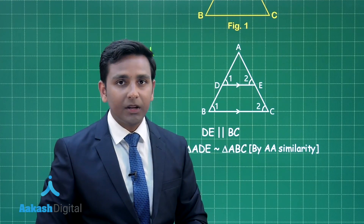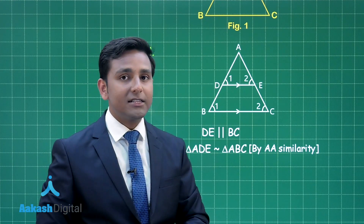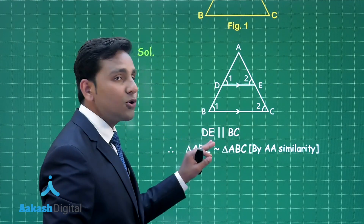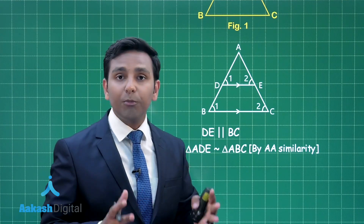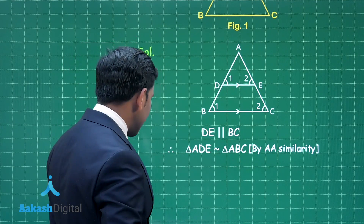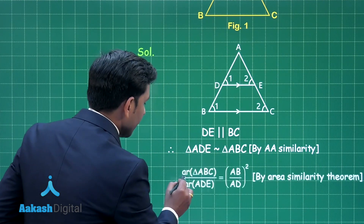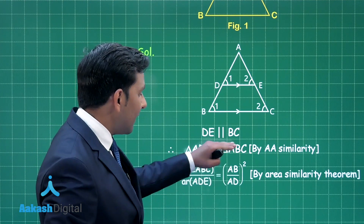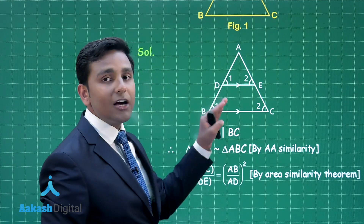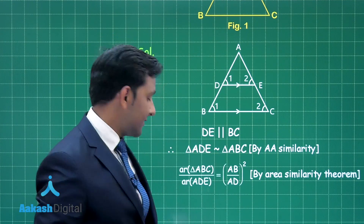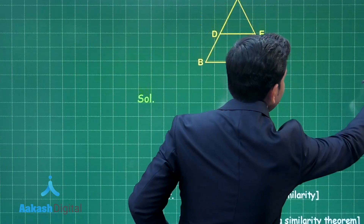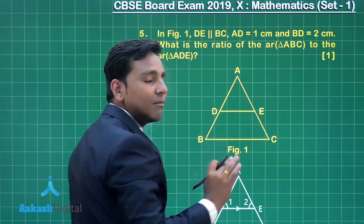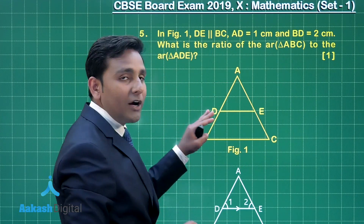The ratio of the areas of two similar triangles is equal to the ratio of the squares of their corresponding sides. So area of triangle ABC divided by area of triangle ADE equals AB² divided by AD². Since AD = 1 cm and BD = 2 cm, the length of AB = 1 + 2 = 3 cm.